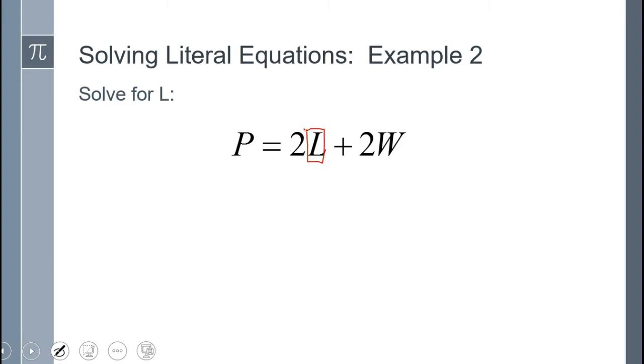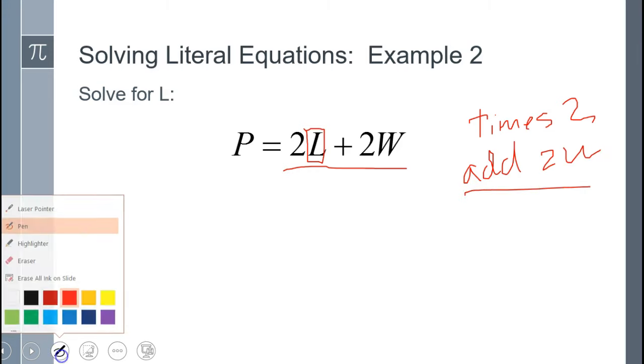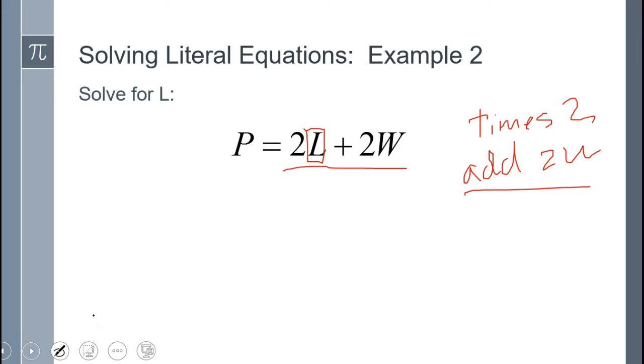The L is connected to things on its side of the equation. If I gave you a number for L, you would multiply it by 2, which the opposite of times is divide, and then you would add the value of 2W. We want to go opposite operation in the opposite order. So the last thing I did was add 2W. So I want to subtract 2W from both sides.